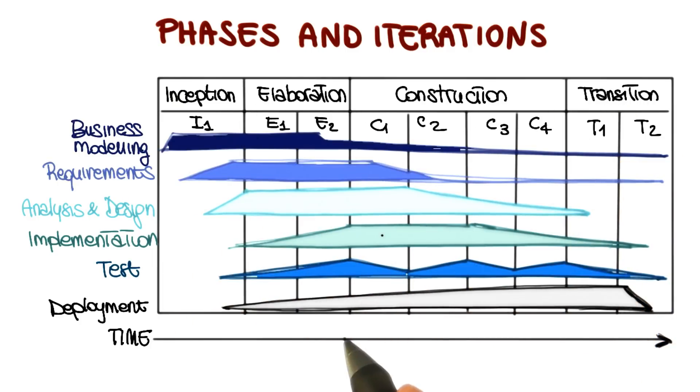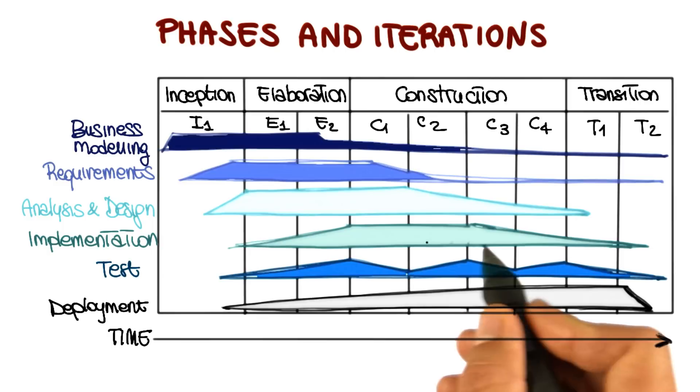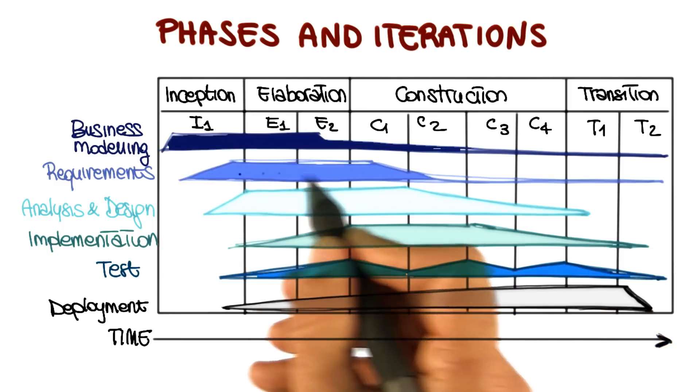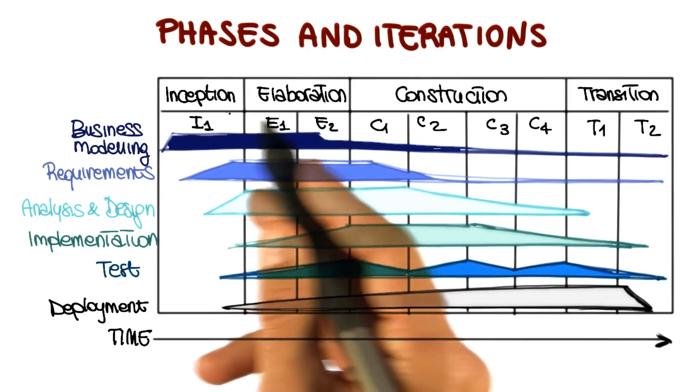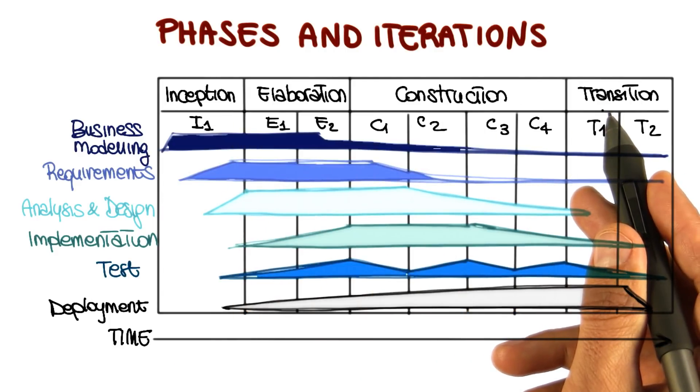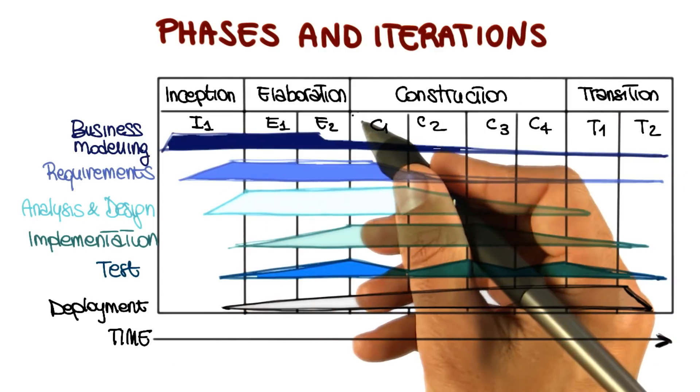For instance, it should be clear why implementation takes place mainly in the construction phase, why requirements engineering is prominent in the elaboration phase, and why deployment activities occur mostly in the transition phase, and so on. So it should be clear now why the activities are so distributed in the four phases.